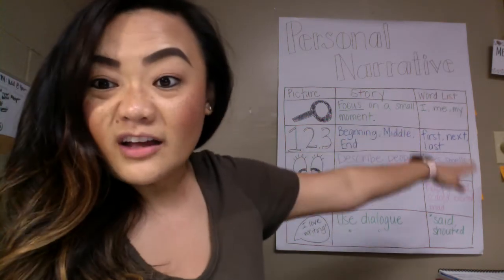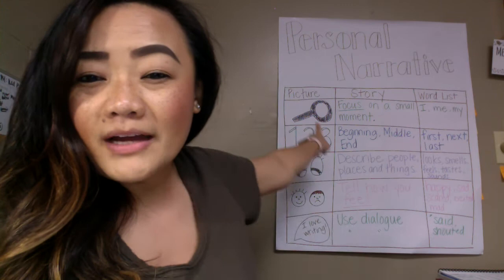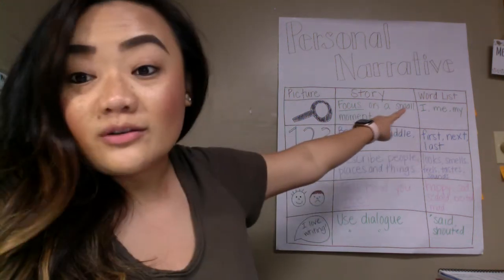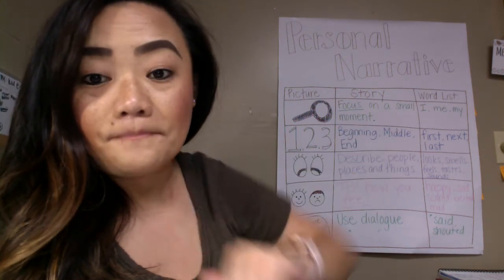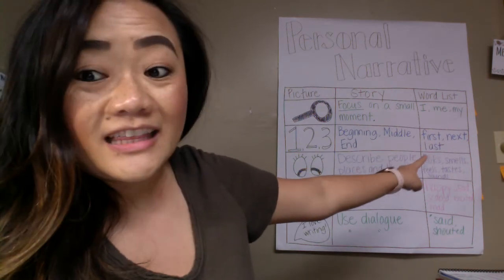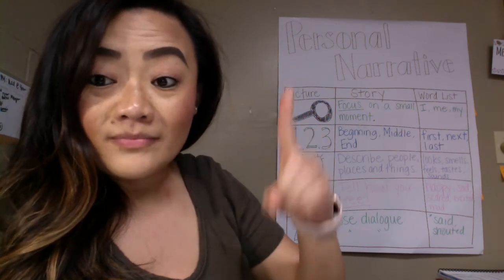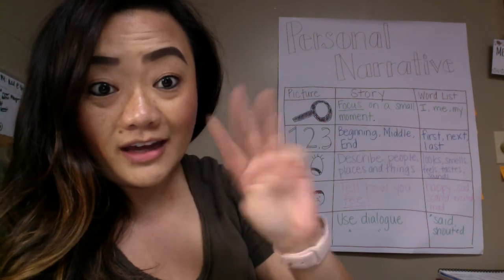The words on the far right side are some words you can use in your writing. Back up here by the magnifying glass, it says focus on a small moment about yourself. Those words are I, me, and my. The one, two, three words say: first, next, and last. So — first, my mom brought me my cake. Next, we put candles on the cake and lit them, and they sang happy birthday. Last, we ate the cake. So that's three things: beginning, middle, and end.